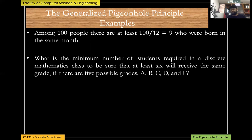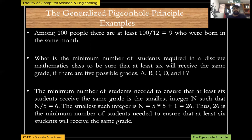With 26 people, whatever arrangement you take, you'll find at least one grade shared by six different people. By the generalized pigeonhole principle: k=5 boxes (grades), we need ⌈n/5⌉ ≥ 6, so n = 5×5 + 1 = 26. Hence 26 is the minimum number of students needed.